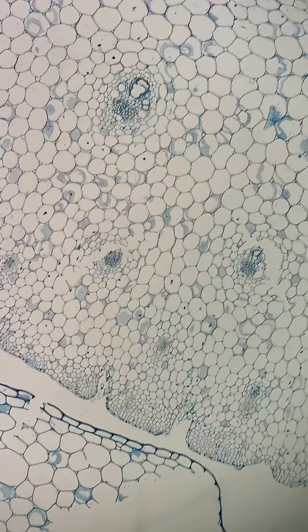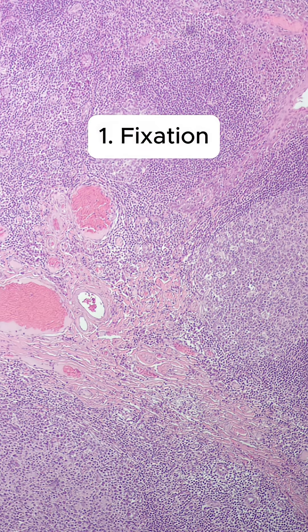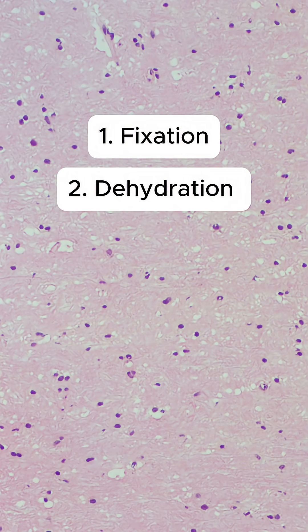It involves four important steps. One: fixation. This preserves the tissue structure and prevents degradation. Neutral buffered formalin is the most common fixative used. Two: dehydration. Water is removed from the tissue, typically using concentrated alcohol.